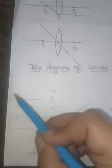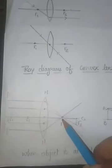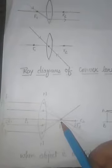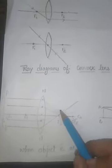Now we will discuss the ray diagrams of a convex lens. The first situation is when the object is placed at infinity. Rays from the object fall on the lens and, according to rule number one, pass through the focus, meeting at the point f2.